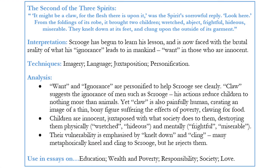Today we are looking at a quotation that explores the significance of ignorance and want and their effect upon Scrooge during his visit from the second of the three spirits. In terms of the novel's structure, it is important that during the second spirit's visit, Scrooge starts to ask questions himself, actively noticing the plight of those around him rather than being forced to observe elements of society he would otherwise have ignored. It is only once Scrooge is open to exploring the poverty around him that Dickens introduces the two helpless children, ignorance and want.